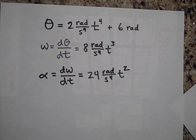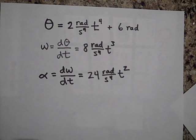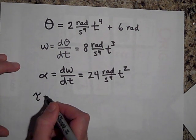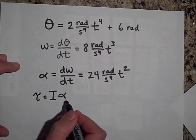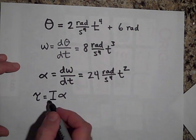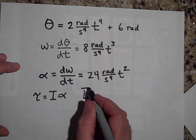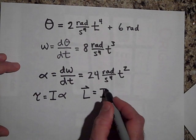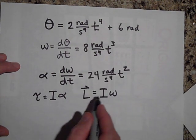If you wanted to get the torque, they'd have to give you I times alpha — so you'd find alpha and then multiply it by I. If they wanted angular momentum, it would just be I times omega, so you could find omega and multiply by I.